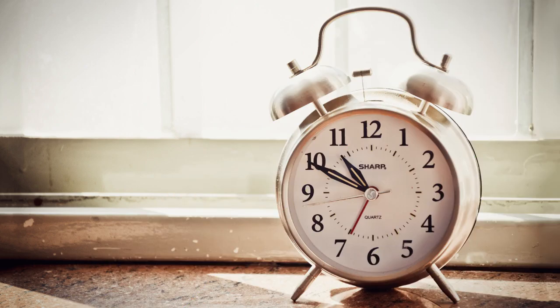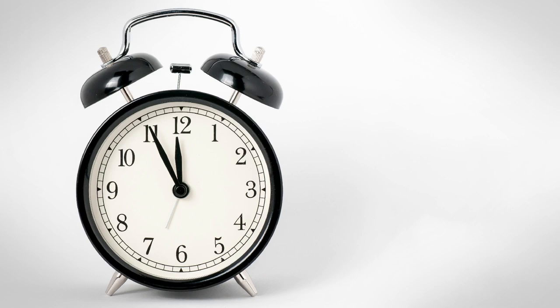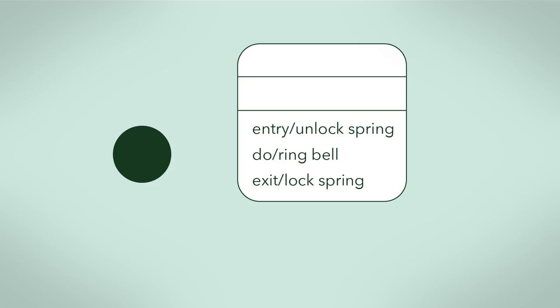To explain these activities, let's use a traditional alarm clock that uses a bell as an alarm. An entry activity for when a clock enters the ringing state is that the clock releases a spring to ring a bell.